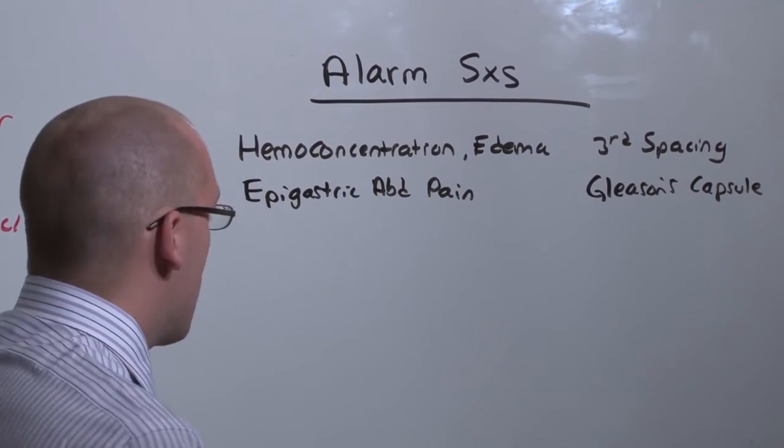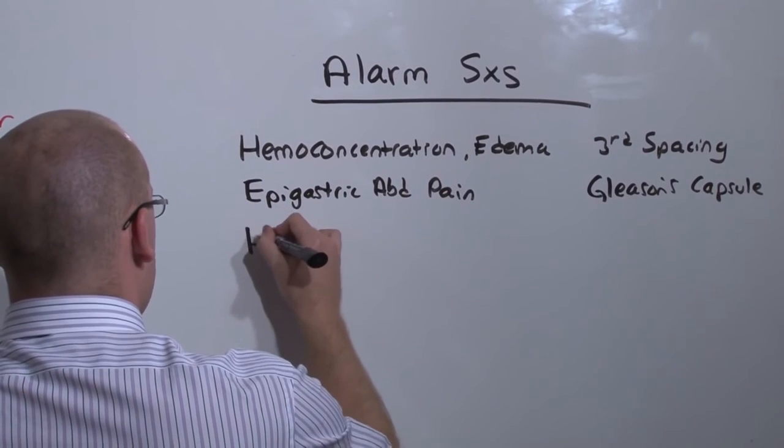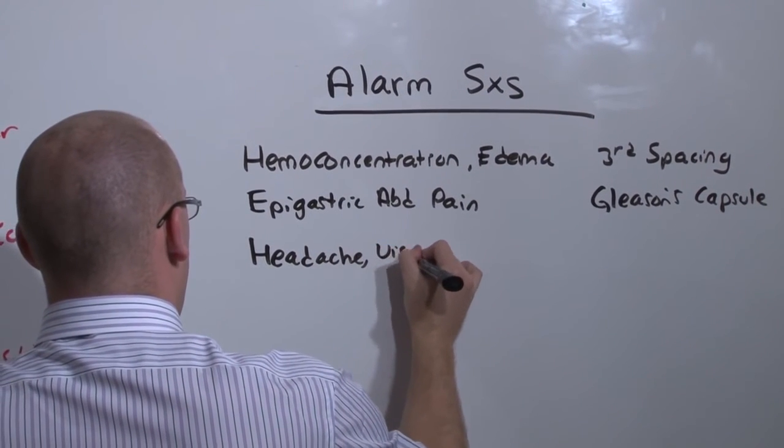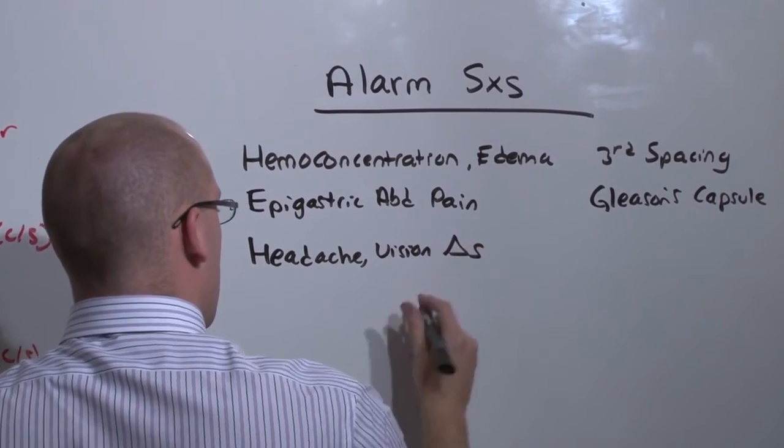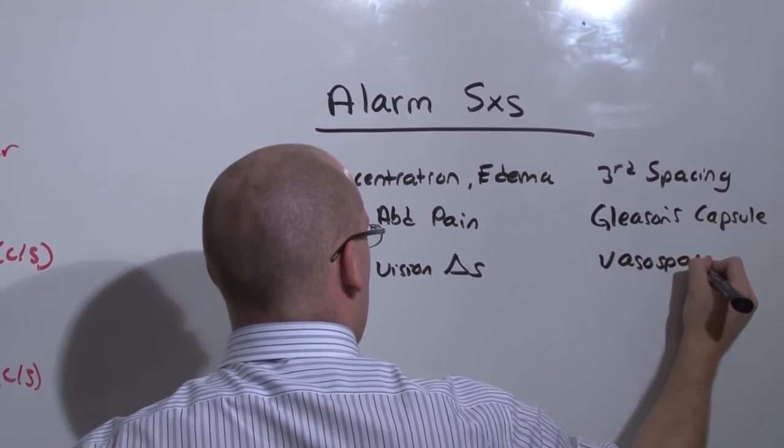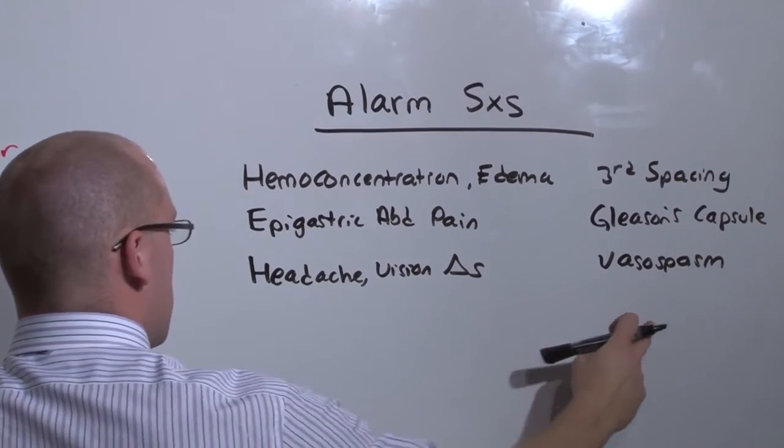Do not write off epigastric or right upper quadrant abdominal pain as no big deal. It could be the sign of Gleason's capsule stretching and they will be having HELP syndrome or preeclampsia. Worse of all, if people begin to have headaches or vision changes, this is a sign of vasospasm, the fundamental pathology of preeclampsia.